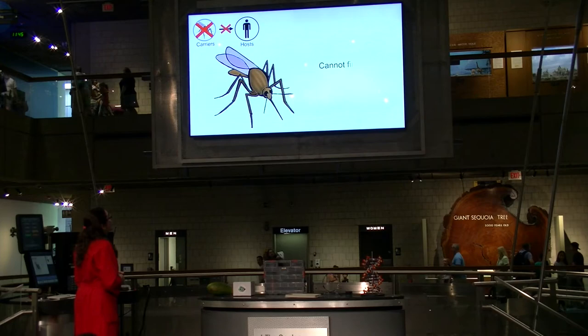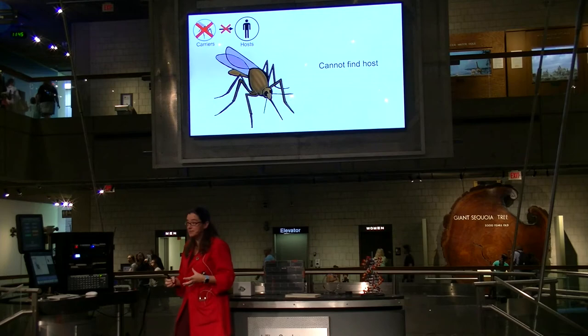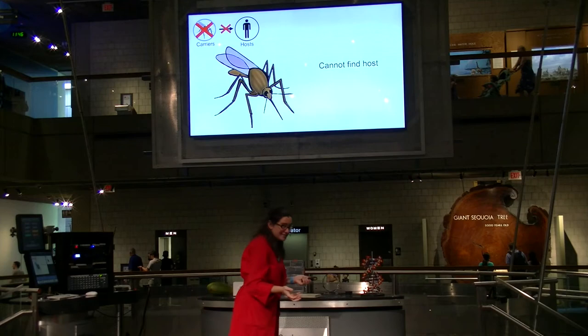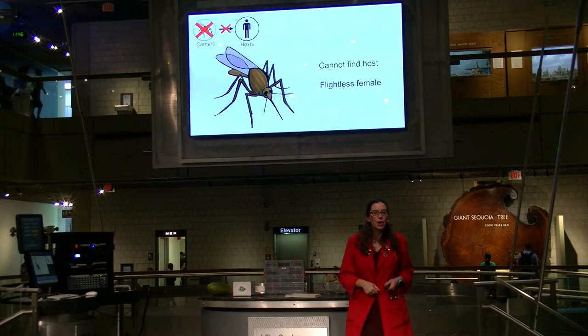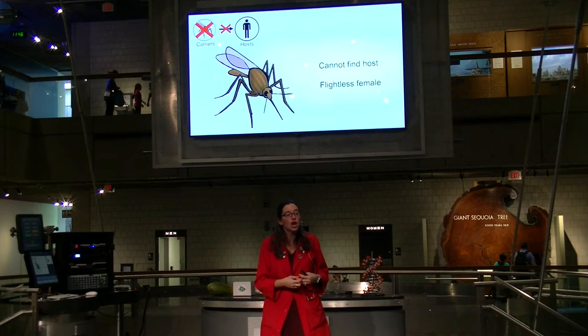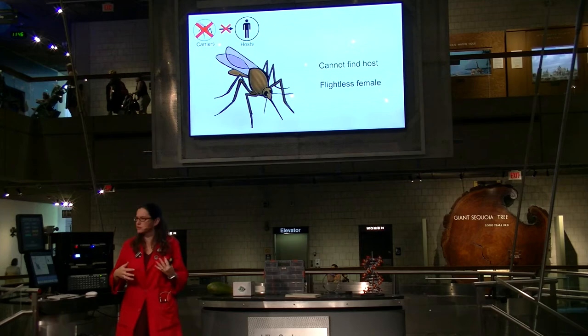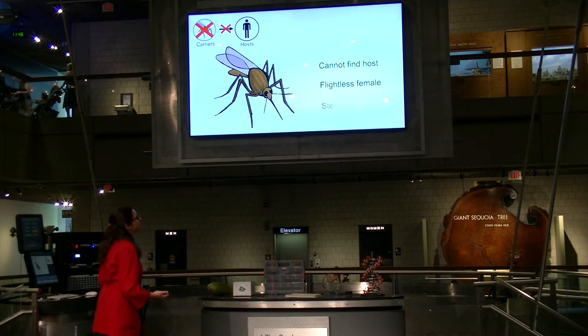Another approach to mitigating malaria transmission is to do something with the mosquitoes themselves — get rid of them or prevent them from biting humans. One thing they can do is affect a mosquito's sense of smell, since mosquitoes smell humans to find and then bite them. They can also make females that don't fly. Females are the ones that bite, so if females can't fly, they can't find humans. If they don't get food, that could potentially wipe out the whole mosquito population.